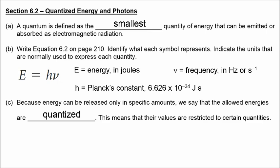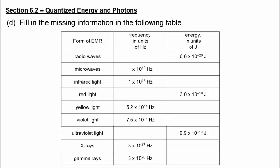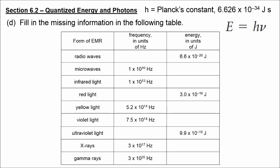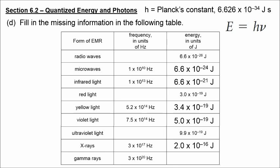Quantized means their values are restricted to certain quantities. To convert from frequency to energy, we multiply by Planck's constant. These numbers get larger because the frequencies are increasing — a direct relationship between frequency and energy. To go from energy to frequency, we divide by Planck's constant, and we can again confirm the direct relationship between frequency and energy.